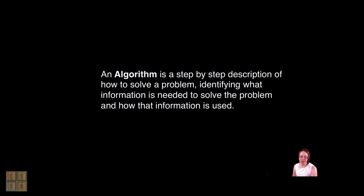An algorithm is simply a step-by-step description of how to do something, which typically also identifies what information is needed and how that information will be used. In computer science as well as mathematics, algorithms are often written abstractly, utilizing variables in place of specific numbers.